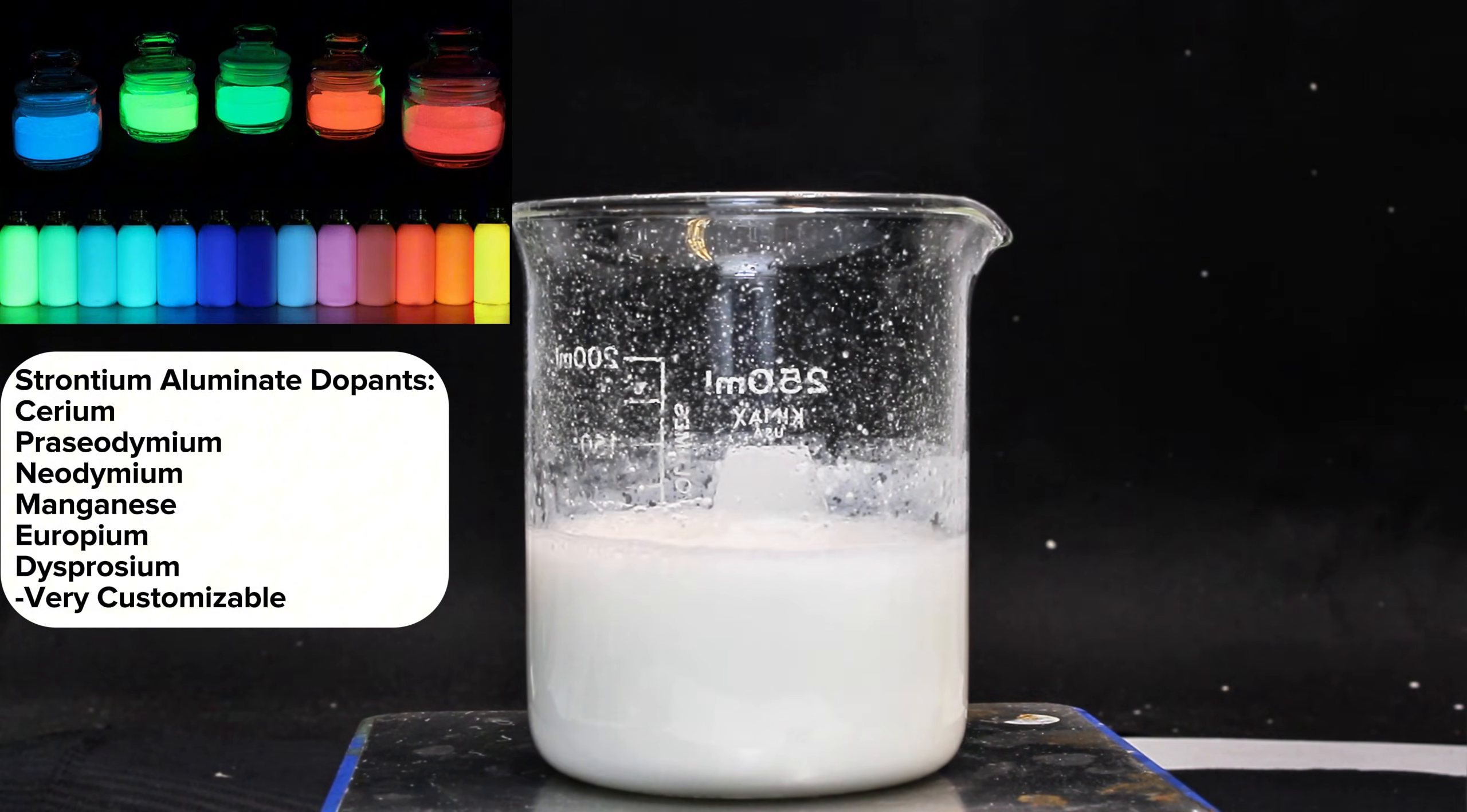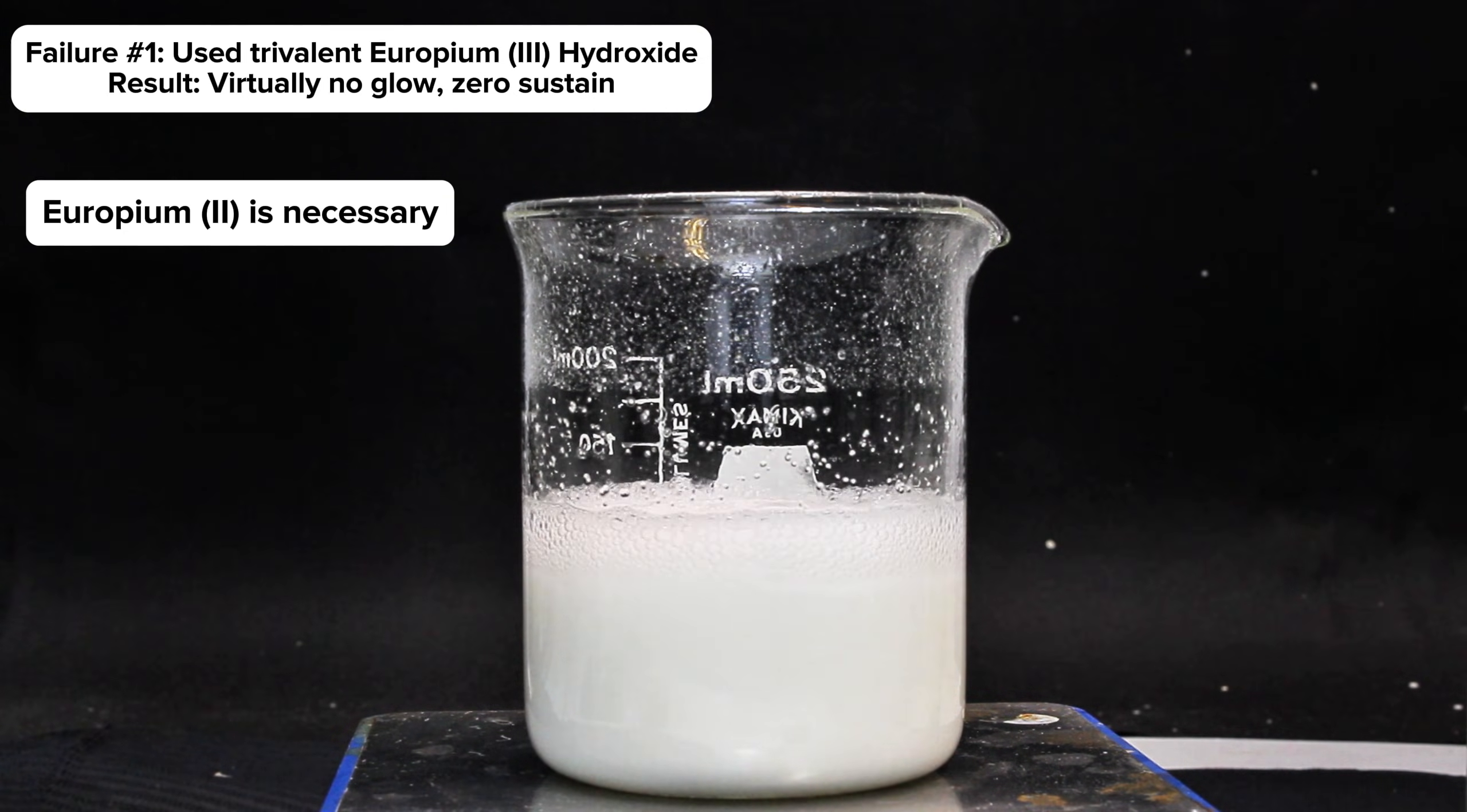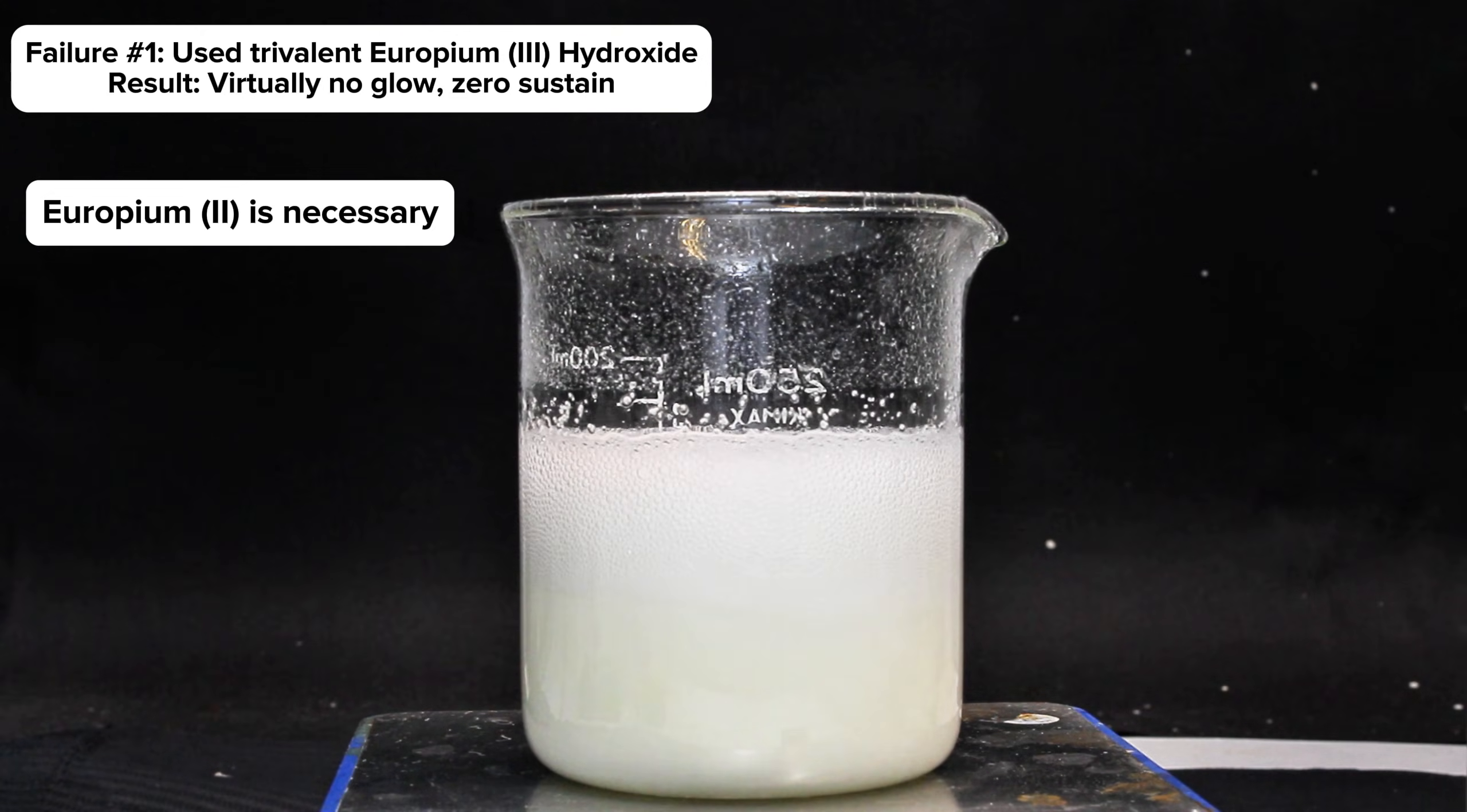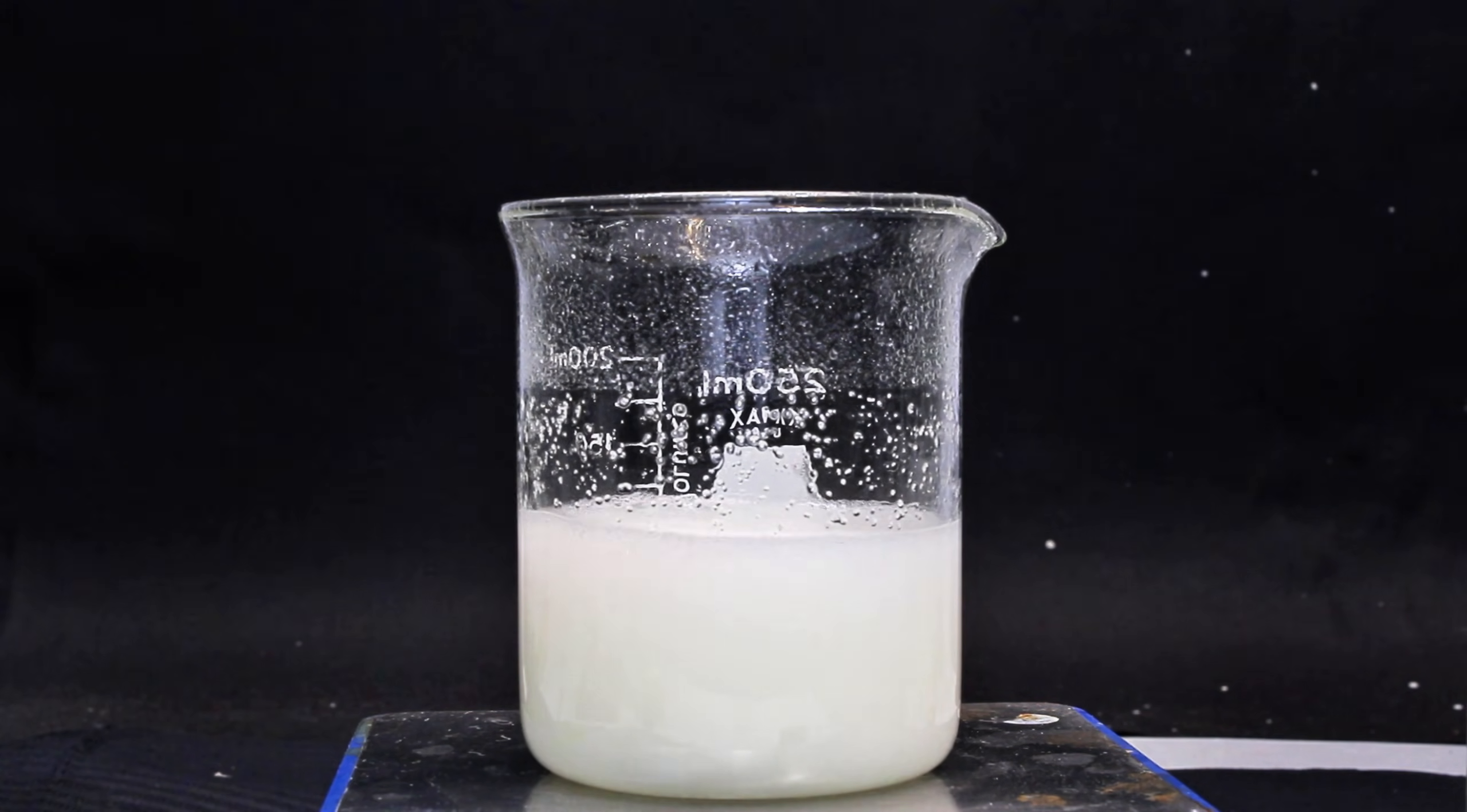This brings me to my first failed attempt at this project, where I made the mistake of using trivalent europium oxide. Trivalent europium oxide produces virtually no photoluminescence whatsoever, and it's critical to use the divalent hydroxide instead. I didn't think this would be a problem at first, thinking the europium would be oxidized to the trivalent state under the extreme reaction conditions anyway, but apparently this is not the case.